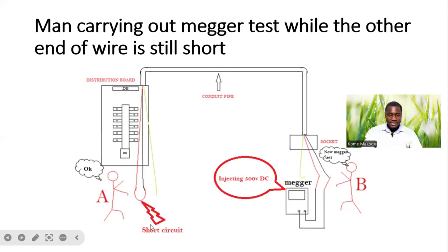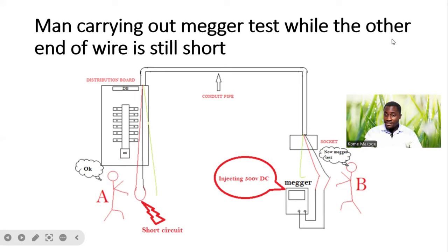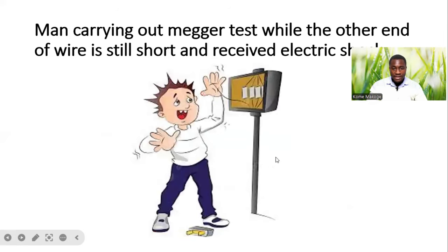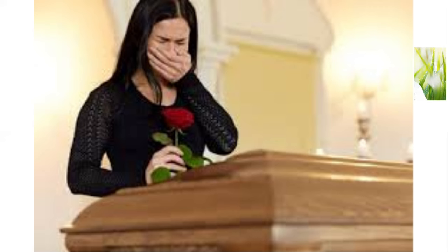The person at the DB side, as you can see, is still running the short. He places the mega tester to conduct the test and selects on the selector range 500V DC — the amount of voltage he is about to inject into this circuit. He injects it. There's a short circuit at this end since it's still shorted. And the person at the field side receives a shock.